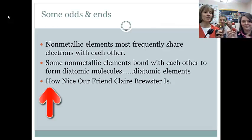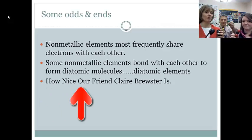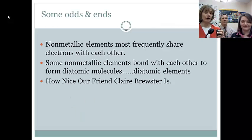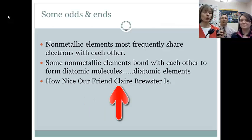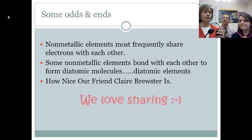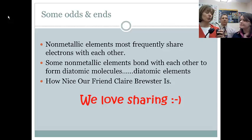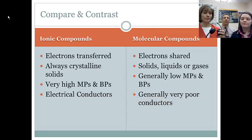And we have hydrogen, nitrogen, oxygen. How Nice Our Friend Claire Brewster Is. Hydrogen, nitrogen, oxygen, fluorine, chlorine, bromine, iodine. Those are all the elements that end up as diatomic molecules. They're so close to having their outer shell filled that they really want to get another valence electron. Most of those are the halogens. So if there's nothing else to get an electron from, they'll bond with each other and share.